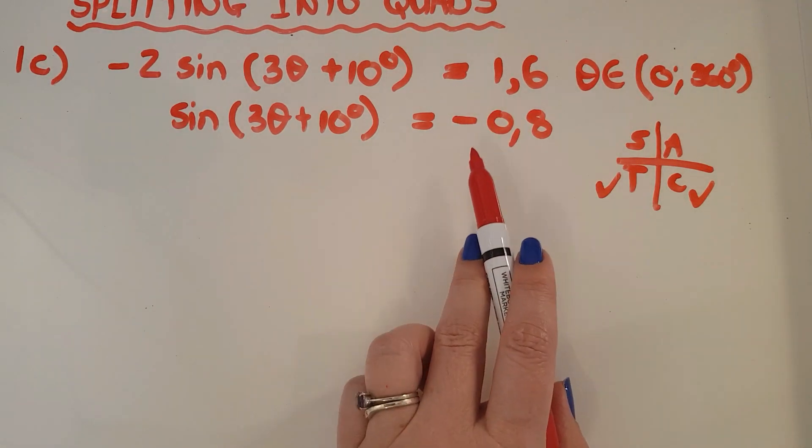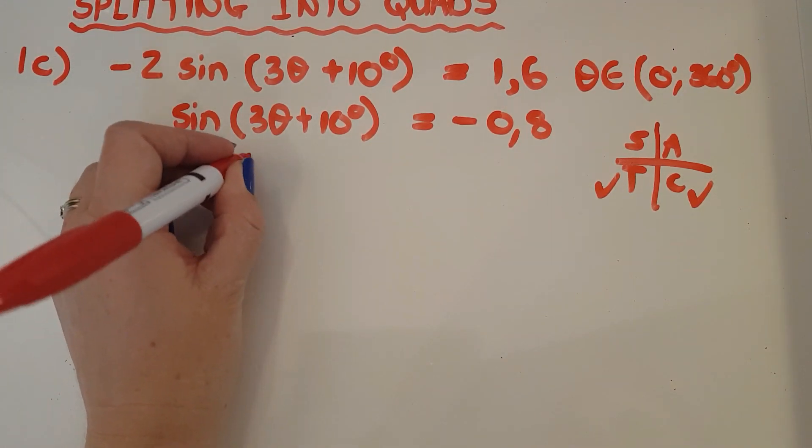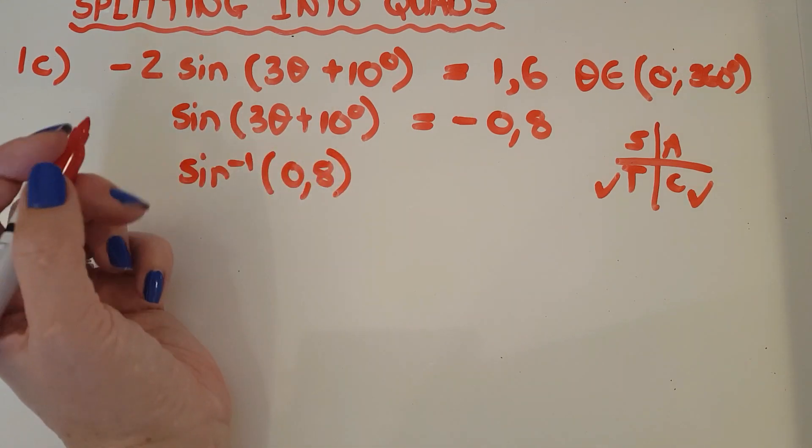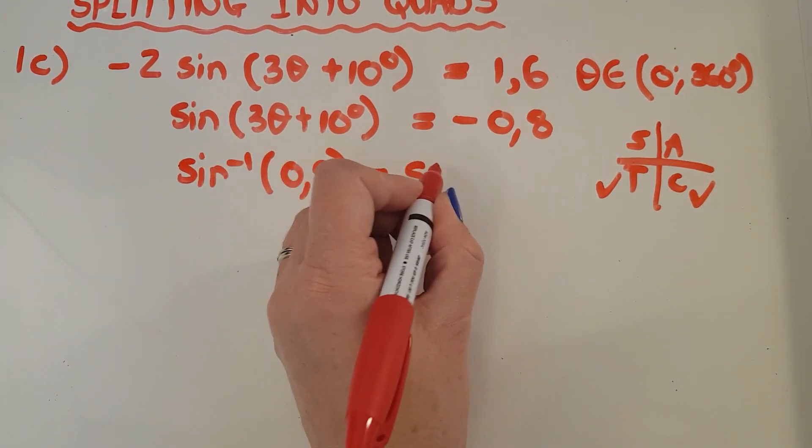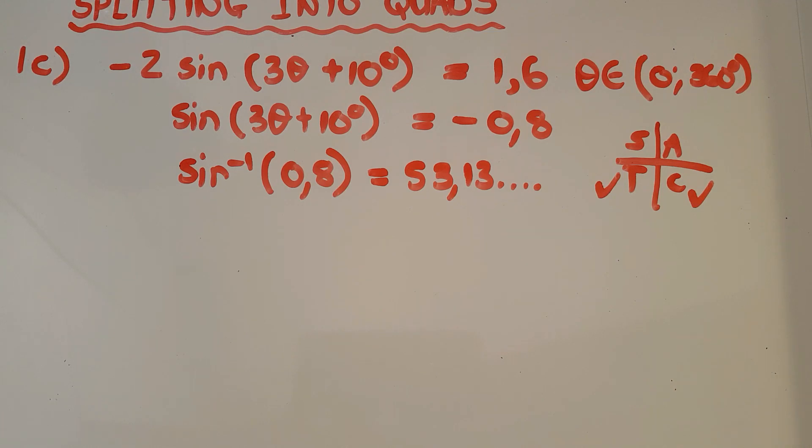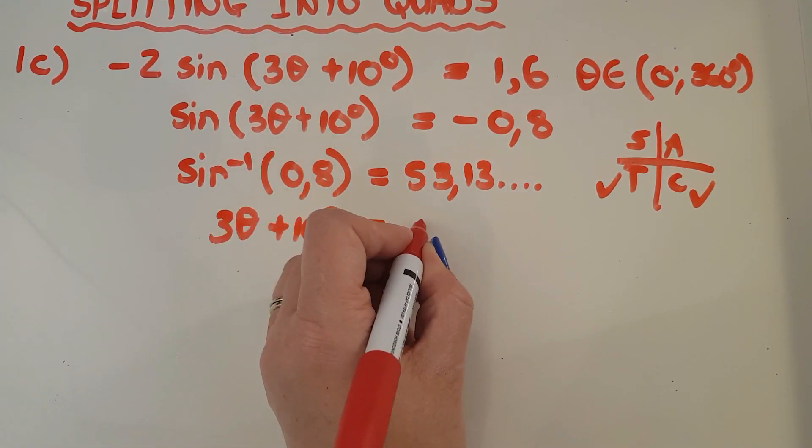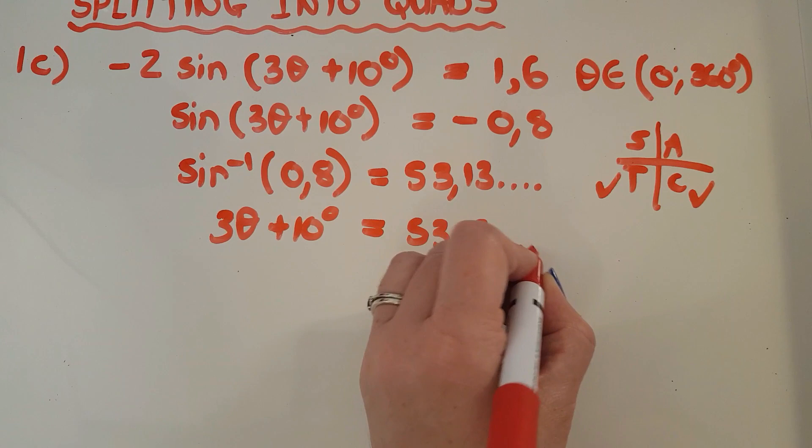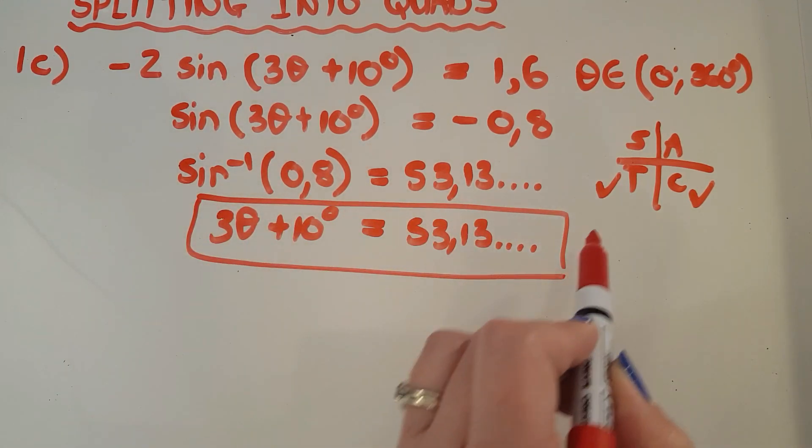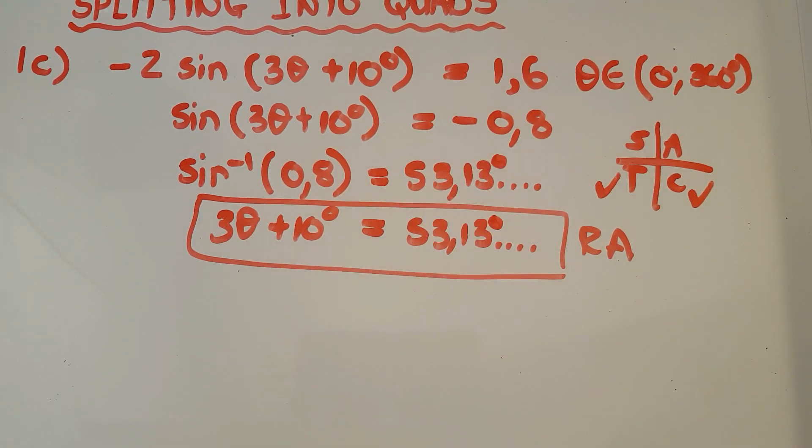So at this point, I'm going to shift, but I don't include the negative when I shift. So I'm going to shift sine the 0.8 without the negative. And then I'm going to get out a long answer, 53.13. You'll see it on the calculator. It's quite a long number. So at that point, what I know is that 3 theta plus 10 degrees gives me this. And this is my reference angle. Don't solve at this point. Do not solve. Your reference angle is 53.13 degrees. And that is how it's going to go to the quads. So now I'm dealing with quad 3 and 4.